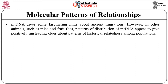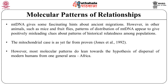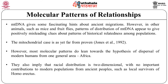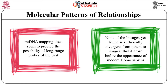Mitochondrial DNA gives some fascinating hints about ancient migrations. However, in other animals such as mice and fruit flies, patterns of distribution of mitochondrial DNA appear to give positively misleading clues about patterns of historical relatedness among populations. The mitochondrial case is as yet far from proven. However, most molecular patterns do lean towards the hypothesis of dispersal of modern humans from one general area — that is, Africa. They also imply that racial distribution is two-dimensional, with no important contributions to modern populations from ancient people such as local survivors of Homo erectus. Mitochondrial DNA mapping does seem to provide the possibility of long-range probes of the past. None of the lineages yet found is sufficiently divergent from others to suggest that it arose before the appearance of modern Homo sapiens.